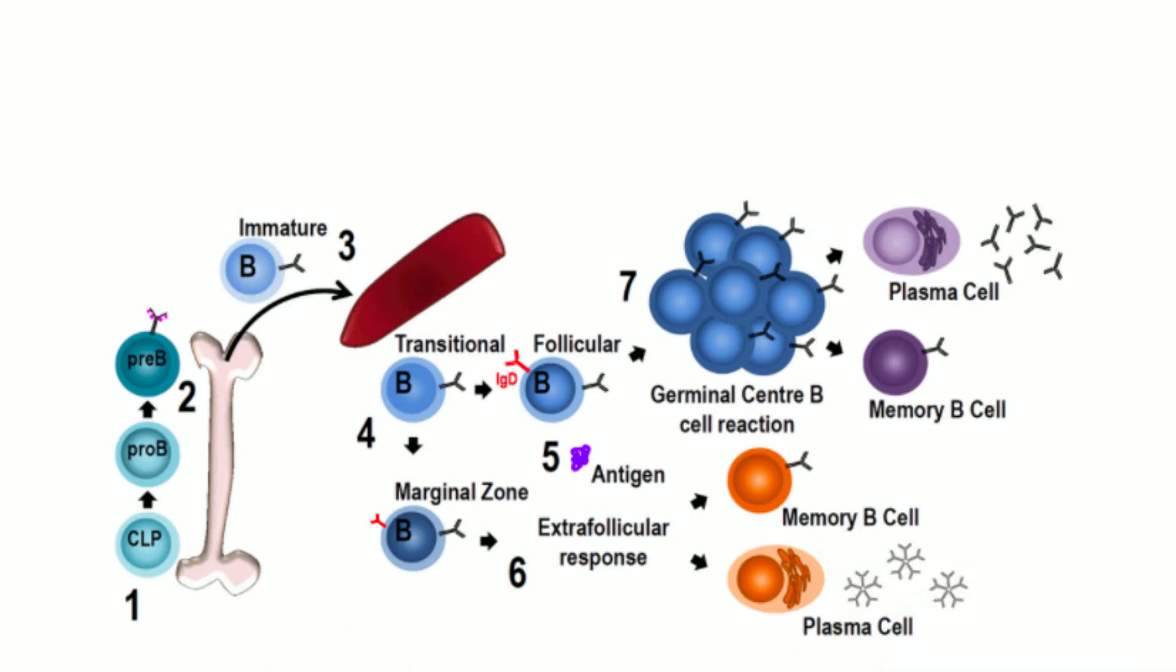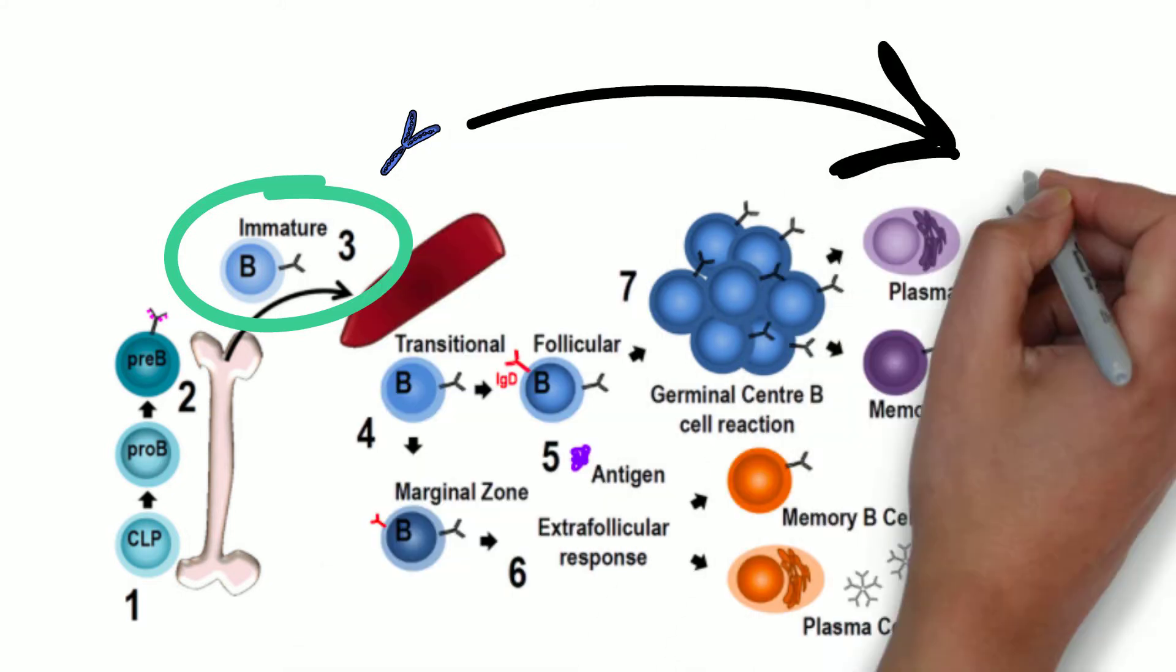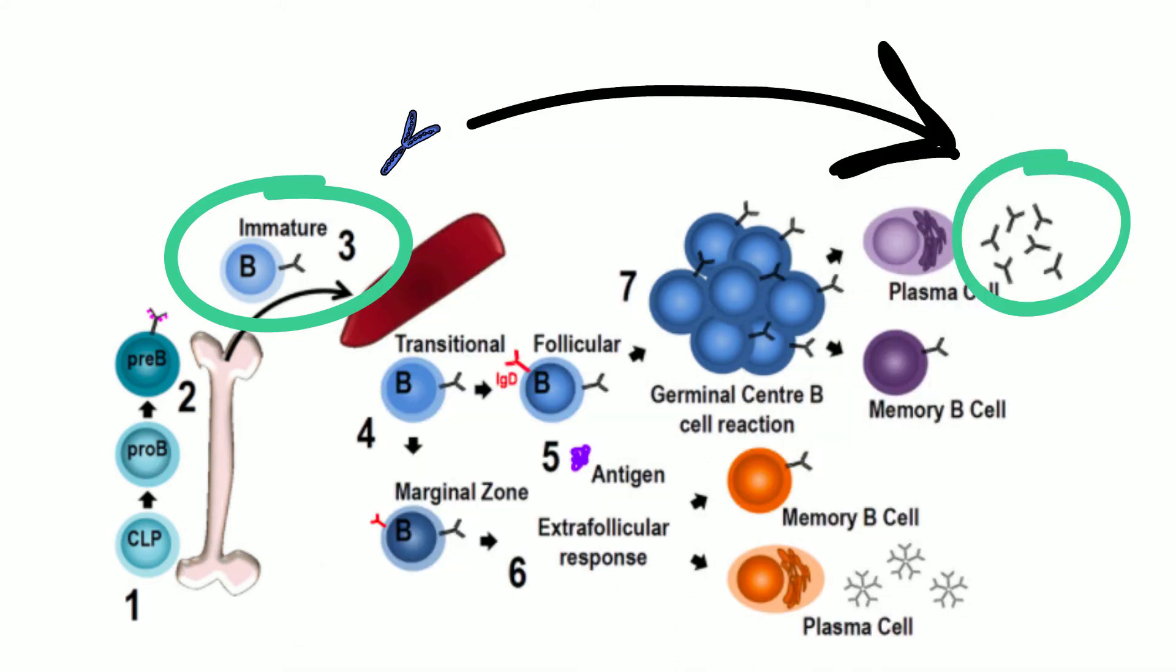B cells are born in bone marrow. These immature B cells have receptors that are very important because soon these receptors will become the antibody everyone is talking about. In this state, these antibodies have random unique specificity, which means they know they're born to serve a special purpose but right now they're unaware of this unique purpose.